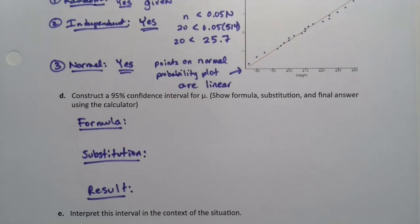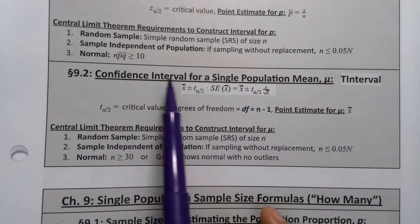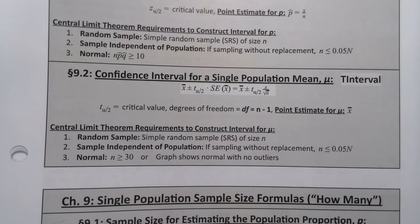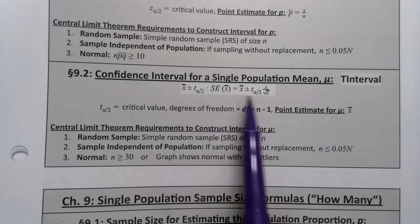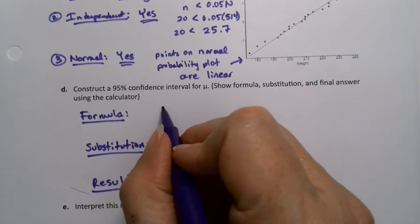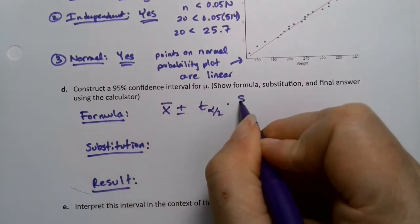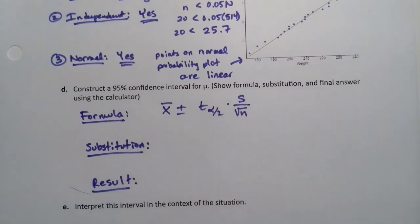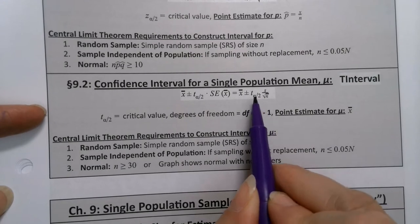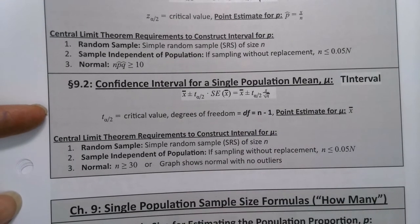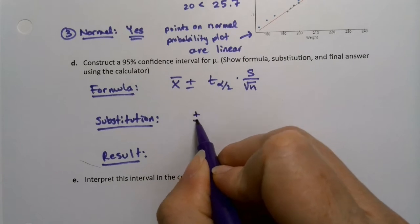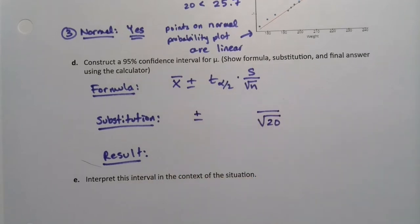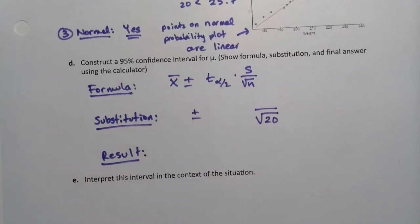For our purposes we really want that right hand one. So it's x bar plus or minus t alpha over two times s over the square root of n. The alpha over two is just a subscript labeling the t. Well I don't know what any of those values are. Oh wait, I take it back. I know that I'm going to have division by the square root of 20. That part I know because I already counted. I don't know what anything else is.